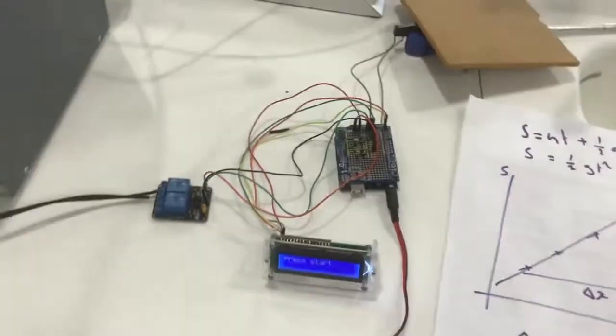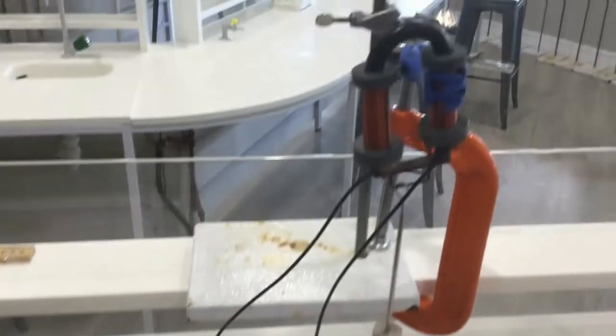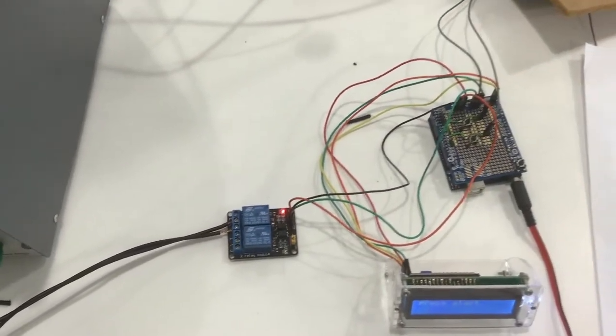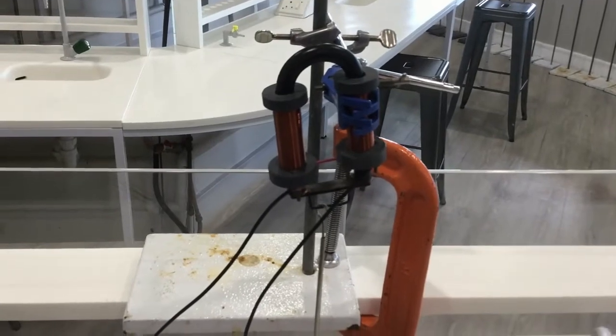So what I've set up here, I've got an Arduino. What the Arduino does is it's connected to an electromagnet up here. As soon as I press the first button, it will turn this relay off, and that will stop the electricity flowing through the electromagnet.